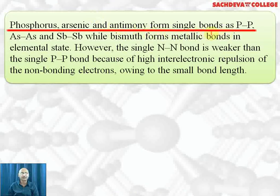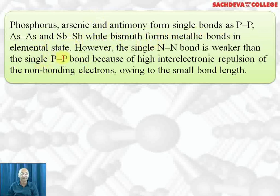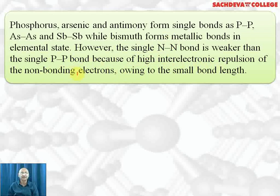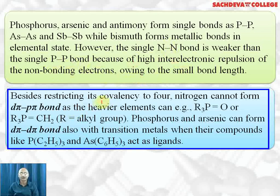Nitrogen can form pπ-pπ bonds; others cannot. Phosphorus and arsenic form single P-P bonds; arsenic forms As-As bonds, while bismuth forms metallic bonds in its elemental state. However, the single N-N bond is weaker than single P-P bonds because of the smaller size of nitrogen and greater repulsion between valence electrons. This bond breaks easily, and that is why phosphorus shows catenation to a greater extent than nitrogen. The high inter-electronic repulsion is due to small bond length.